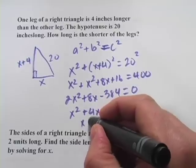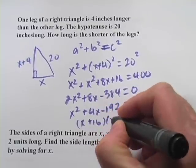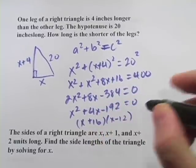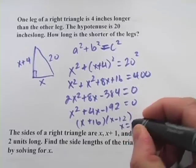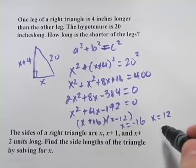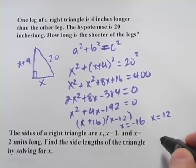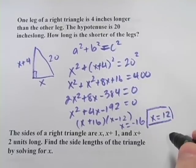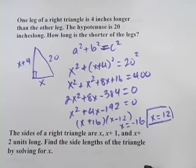It does factor to x plus 16 and x minus 12. So our two possible answers are x equals negative 16 and x equals 12. And since we're talking about the length of something, the negative answer doesn't really make sense. So x equals 12. That is the shorter side.